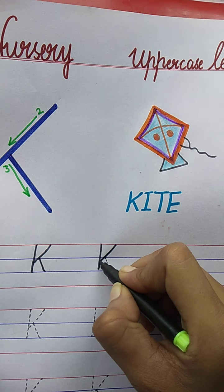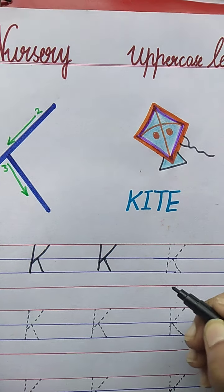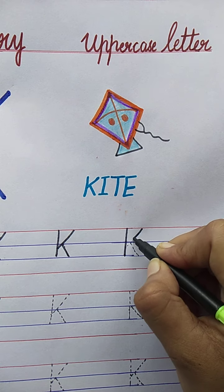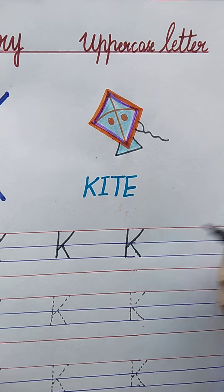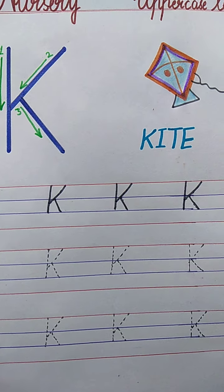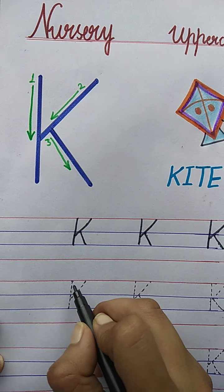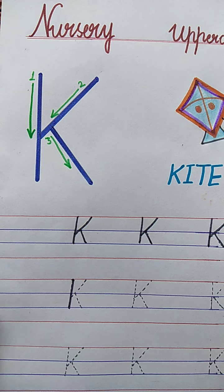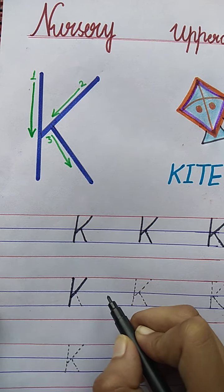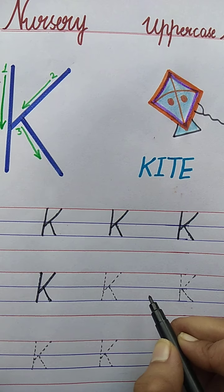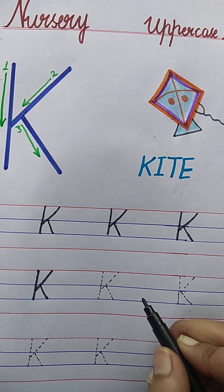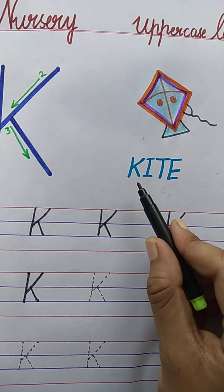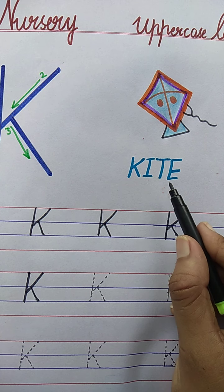See here: standing line, slanting line, slanting line. K for kite. Very good. Again: standing line, slanting line, slanting line. K for kite. Very good. Now again — put your pencil on the red line, match the dots, make the standing line. Then draw a slanting line, one more slanting line. K for kite. Speak with me: K for kite. Now the spelling of kite is here: K-I-T-E. Kite. K-I-T-E. Kite.